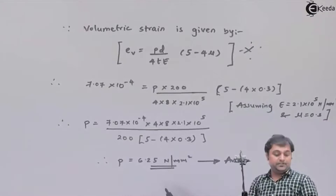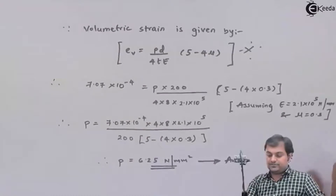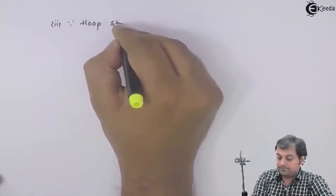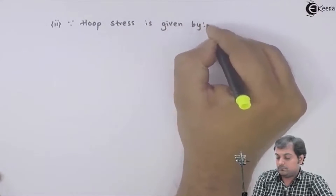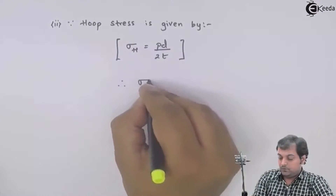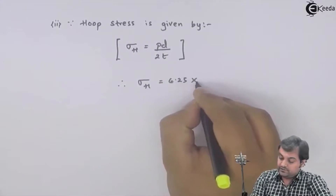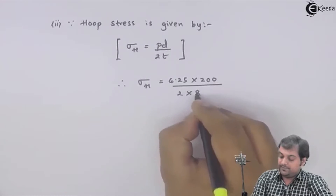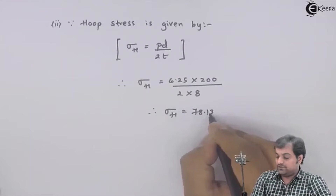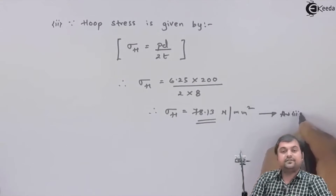That is the first answer: 6.25 Newton per mm square is the internal pressure developed inside the cylinder. The second question is hoop stress, also called circumferential stress. The formula for hoop stress is PD upon 2T. Therefore hoop stress equals 6.25 into 200 divided by 2 into 8. The hoop stress value comes out to be 78.13 Newton per mm square. This is the second answer, and with this we complete the question.